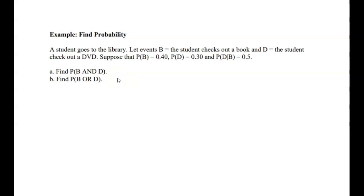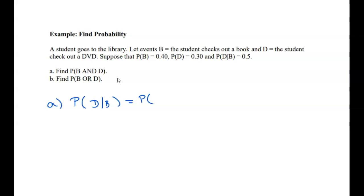We're going to find these probabilities. For part A, let's start with the definition of conditional probability. P of D given B equals P of B and D divided by P of B.